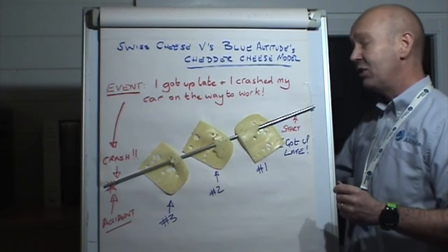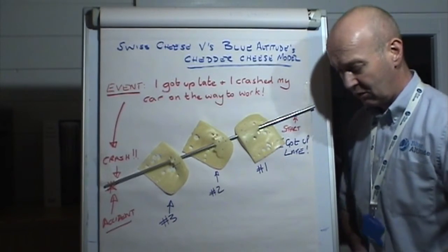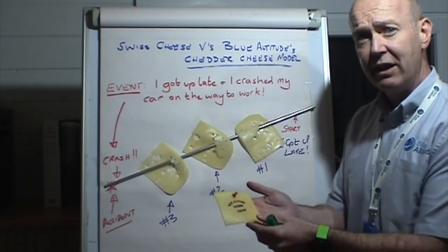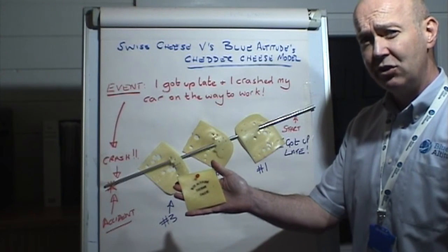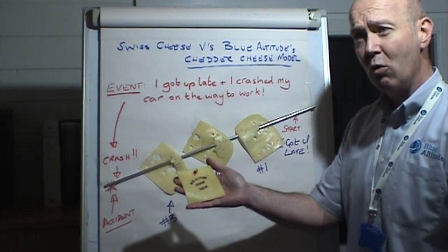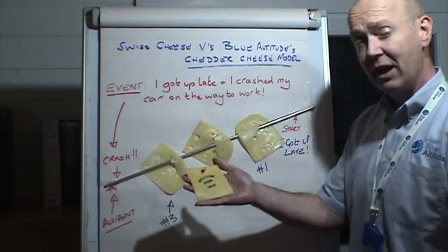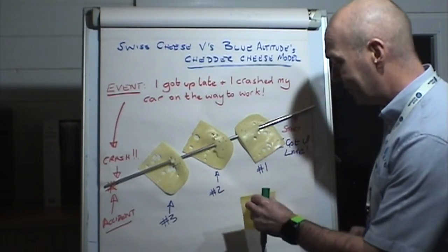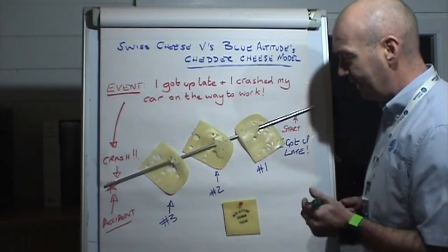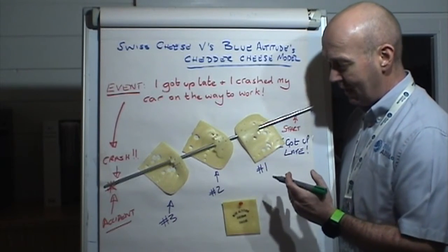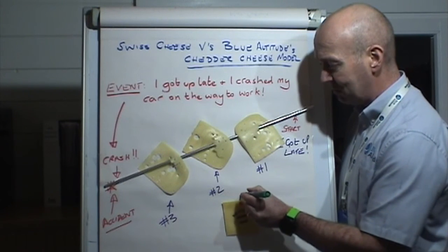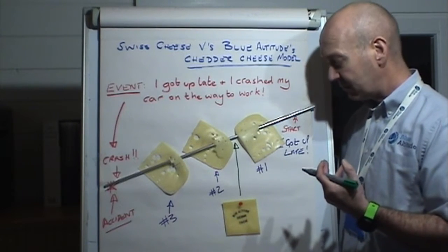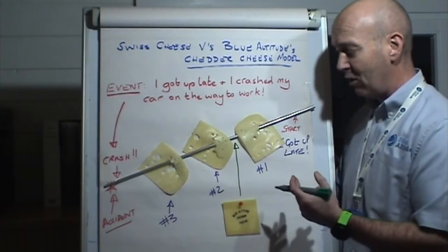Now the way to mitigate that is with the cheddar cheese model. I have a piece of what we call Blue Altitude cheddar cheese in my hand. You can see there are no holes in this piece of cheese, and I am a lover of cheddar cheese — for the taste, the texture, and the smell. If I place the cheddar cheese on the flip chart and align it, the idea is that it breaks the sequence of events.